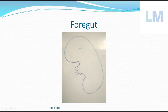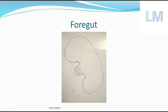The pancreas is developed from the endoderm of the foregut. The lowermost end of the foregut will give one diverticulum. The foregut is present in the head fold of the embryo. Initially the embryo has a yolk sac in front and an amniotic cavity behind. After formation of the head fold, the yolk sac is drawn into the embryo to form the foregut, midgut, and hindgut.